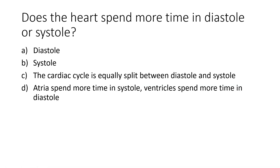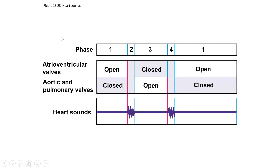That is all we're going to look at in terms of the cardiac cycle. On Friday we'll look at cardiac output, which is the last packet of the cardiovascular system. We'll probably spend some time doing practice questions, reserve the last 30 minutes of class on Friday to take questions, review important topics for exam four, and practice a few questions.